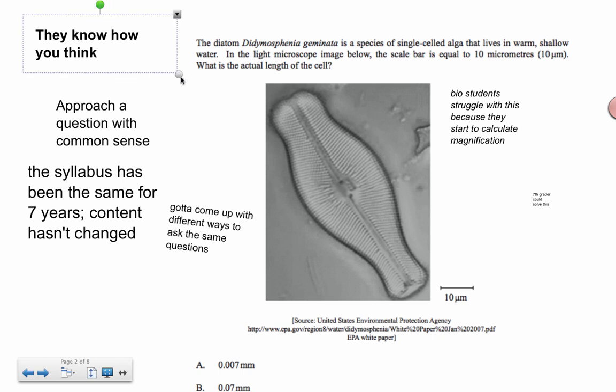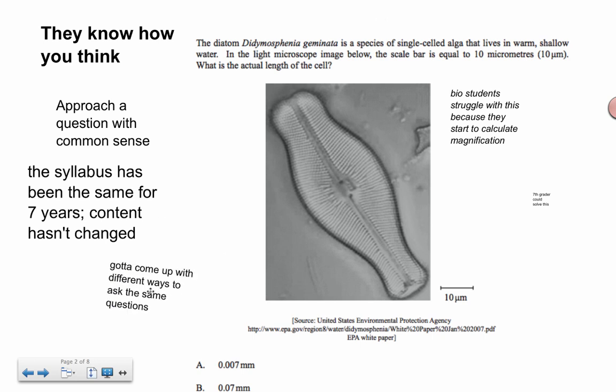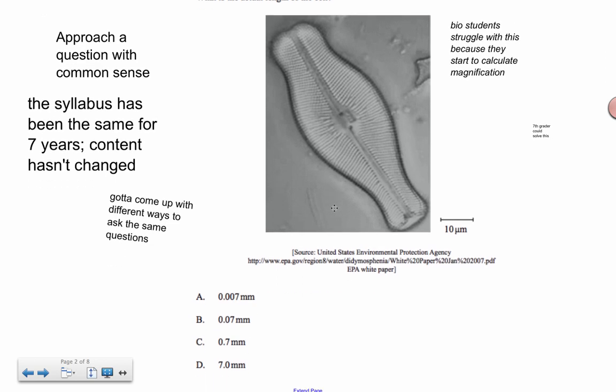They know how you are thinking. They know what you've been practicing. They know that when you see a question like this, you want to calculate something. You start thinking, oh I need to calculate magnification, it's image size over actual size. And so students get caught up on this question. Believe it or not, you can pause it and try this question if you haven't tried it already before.